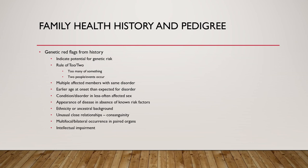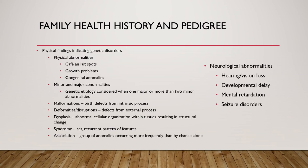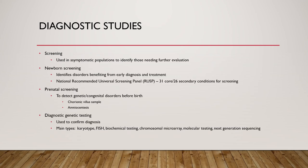Red flags to look for include: how many family members have the condition, early age onset, ethnicity, multifocal or bilateral occurrence, impaired organs, intellectual impairment, physical findings, growth problems, congenital abnormalities or malformations, specific syndromes, neurological abnormalities, developmental delays, intellectual disability, and seizure disorders — all of which highlight why a thorough family health history is so important.